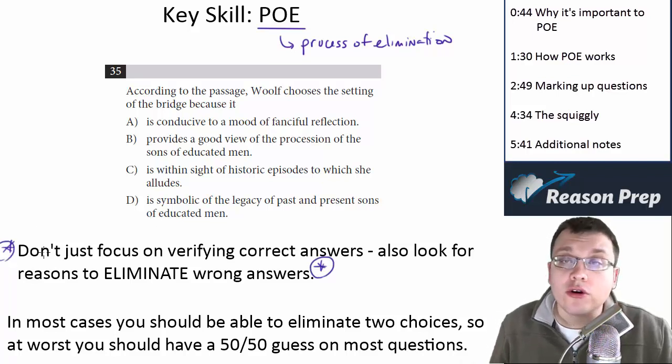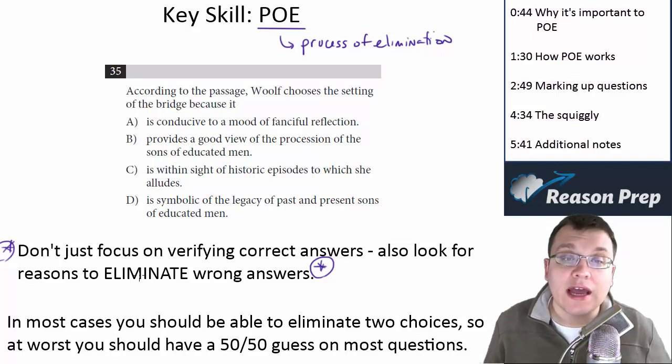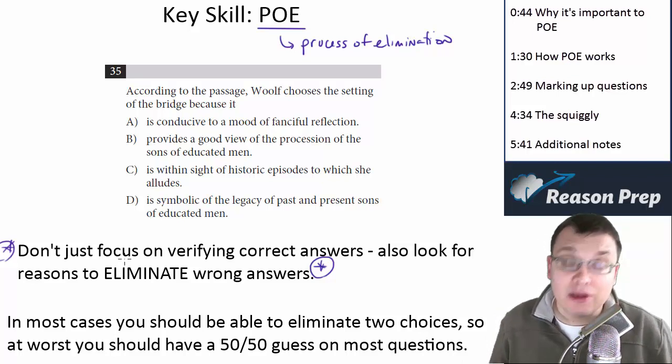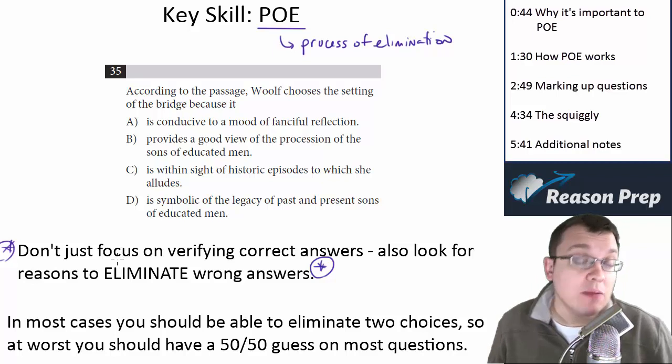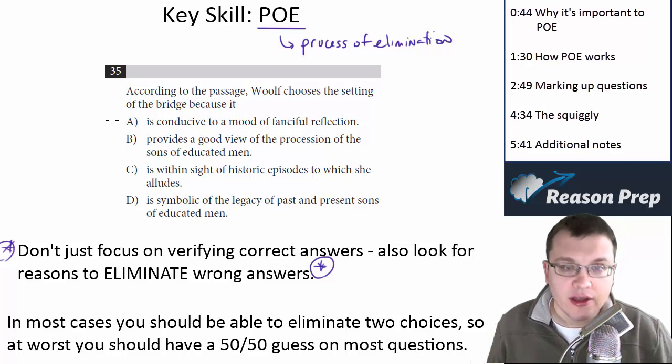So when you're going through your choices, you don't want to just focus on verifying correct answers. You don't want to look at A, B, C, and D and say, okay, A, why can A be right? Or B, why can B be right? Why can C be right? Why can D be right? Because you might find some reasons, on some level at least, for multiple choices working, right?